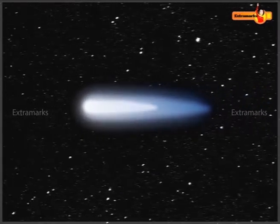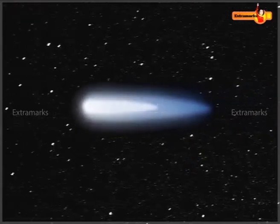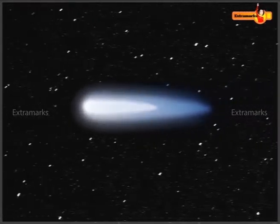A comet is a large icy celestial body which has a long tail. A comet orbits around the Sun.